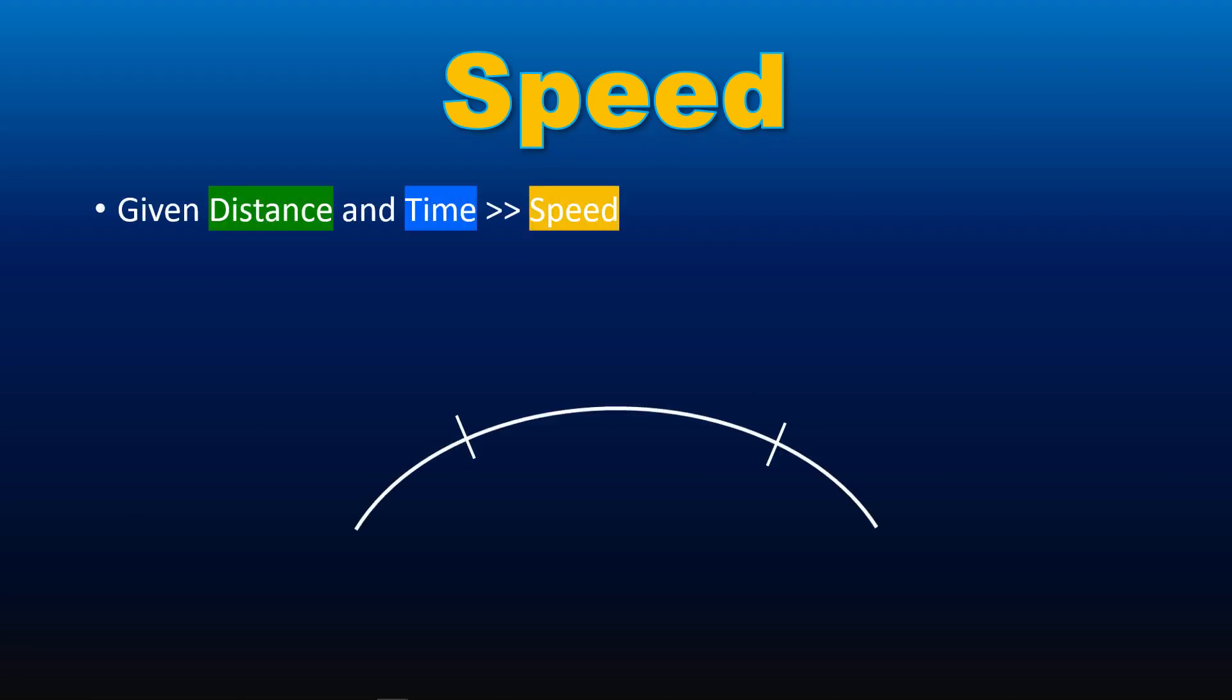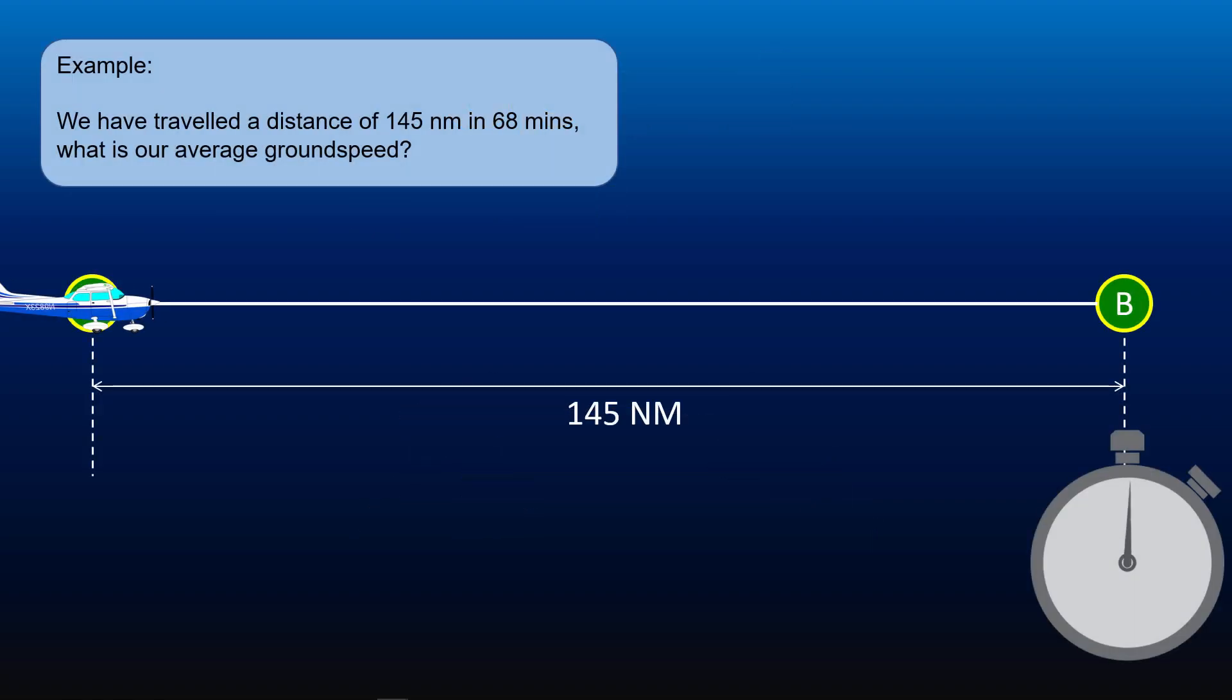Given distance traveled and elapsed time, we can find the speed using CRP5. To find our speed over a given distance, set the elapsed time on the inner scale against the distance on the outer scale. Then read off the speed on the outer scale against the 60 index on the inner scale. Let's take a look at an example.